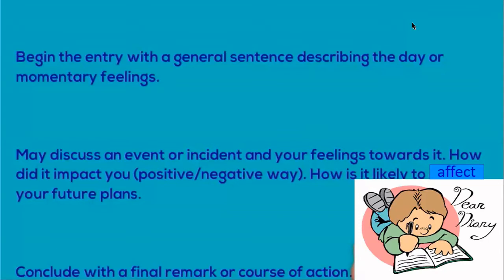So you start with the general sentence — 'I'm thoroughly disappointed at my teacher today' — and then you go on to explain what happened, and then you say how it impacted you: 'The rest of my day was dull, I couldn't be active in any other classes, the incident kept repeating in my head.' Then for a future plan you can say: 'I'm going to pen down a letter to her so she knows it wasn't me who was eating in class, because I don't want her to feel that I am a student who eats in the middle of class.' At the end you conclude with the final remark or course of action — that will be your concluding sentence.